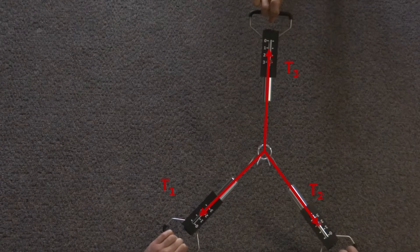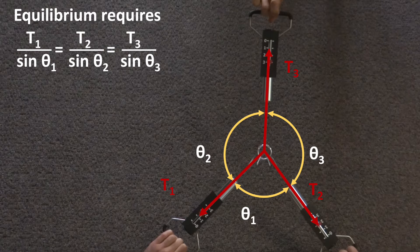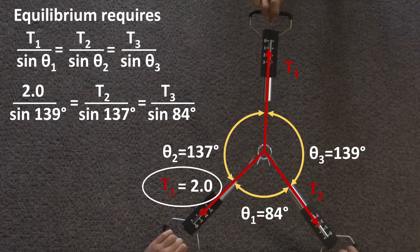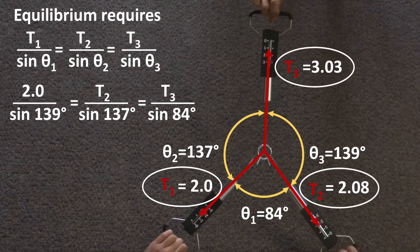If three tensions are in balance, their relative strengths can be inferred from the angles between them, and if one tension is known, the others can be calculated.